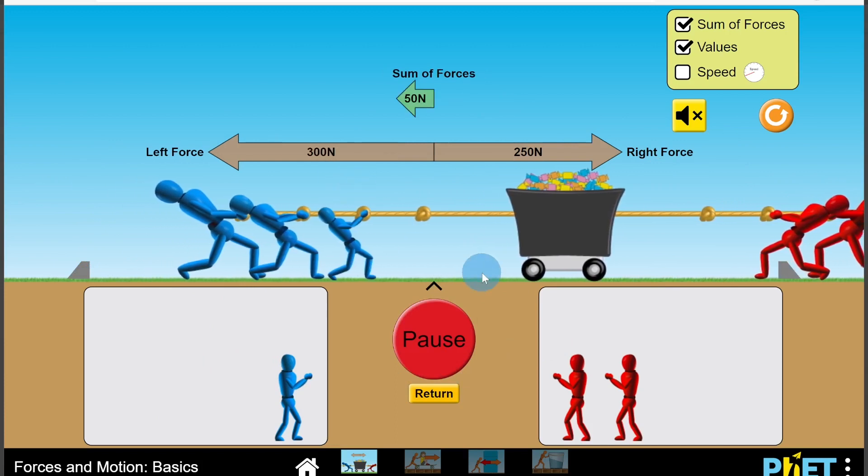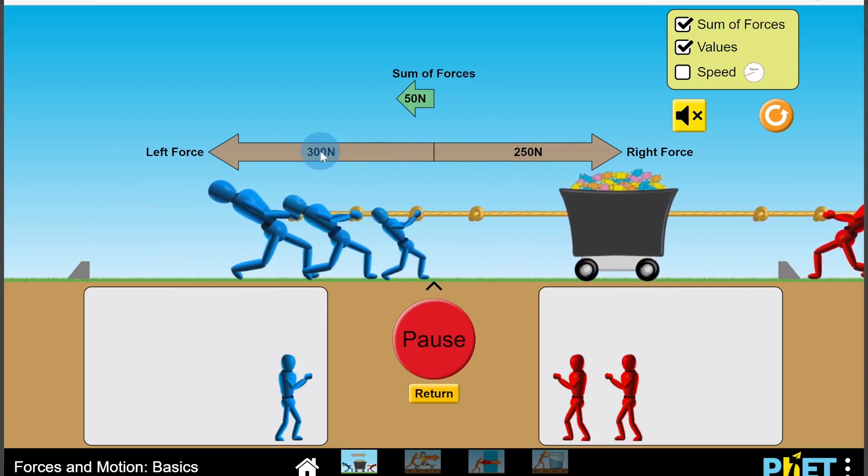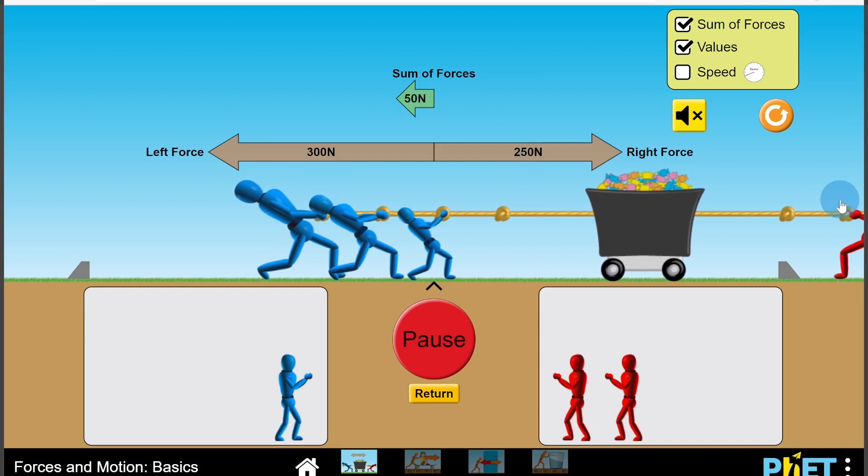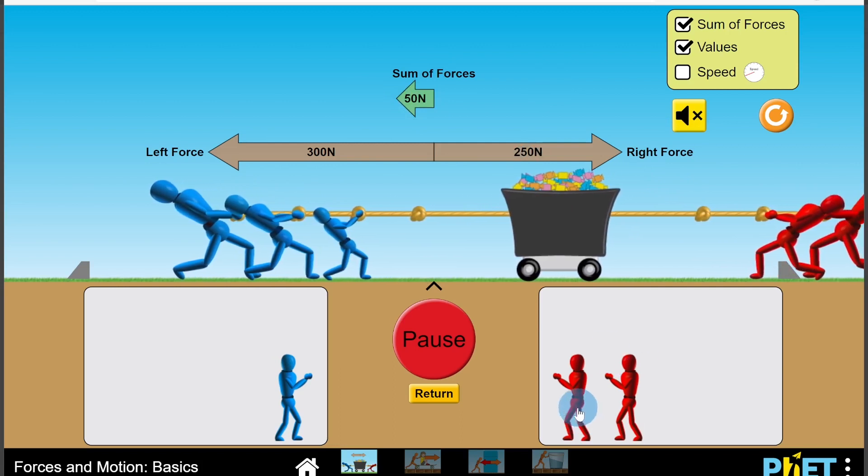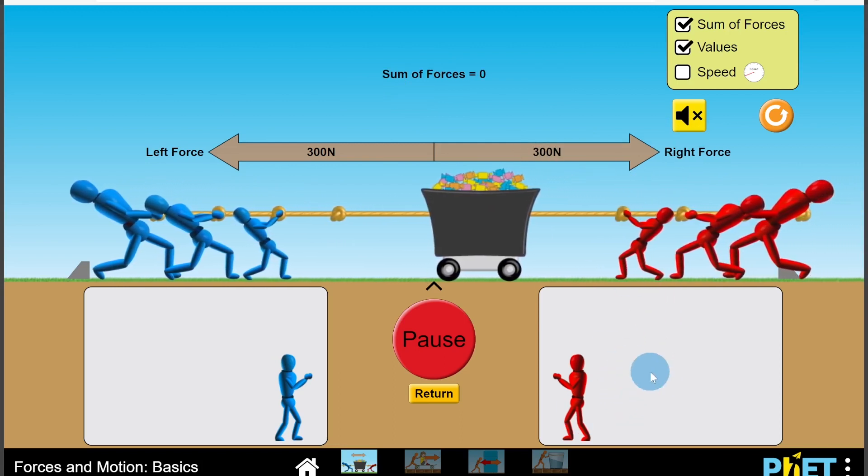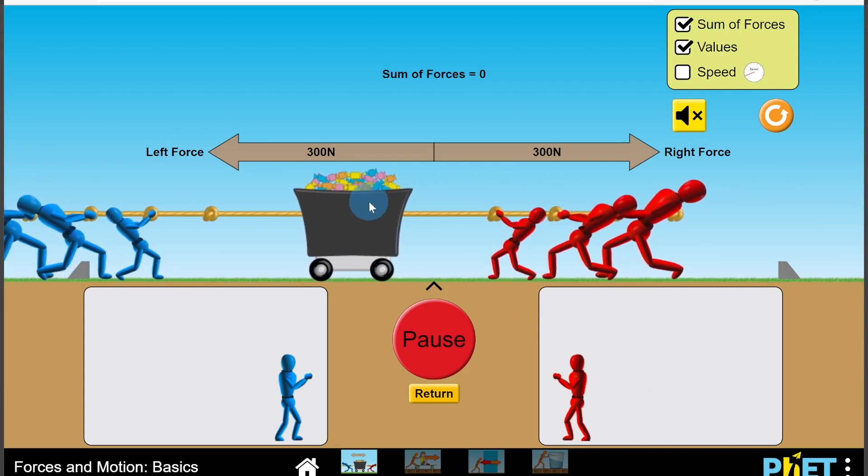Then you'll see now we have 300 newtons to the left and 250 newtons to the right. So now the unbalanced force is to the left, so you'll see now the overall motion is moved to the left. And we could then balance that out again as shown, and now we get balanced forces where the object in the middle is going to move at a constant speed.